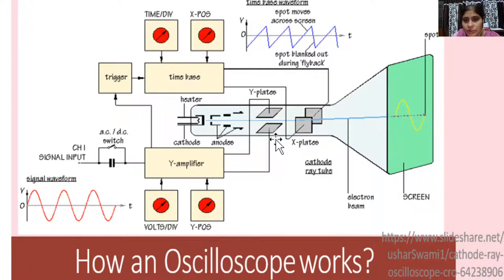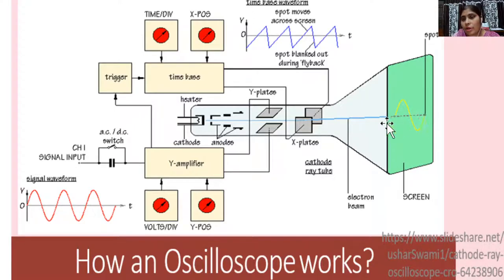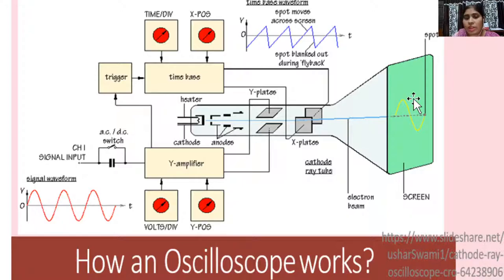The input signal is present on the Y plate and the sweep signal is present on the X plate. These two signals create their fields. Because of this, when the electron passes through this field, the electron is deflected and goes to strike on different places of the screen. The electrons give their energy to the phosphor atoms coated on the screen. The valence electrons of the phosphor atoms absorb that energy and leave their valence band, but after some time they return. When they come back, they emit their excess energy in the form of light — and in this manner, the wave is displayed on the CRO.